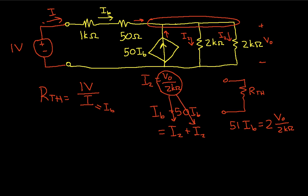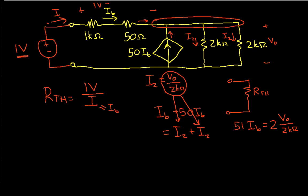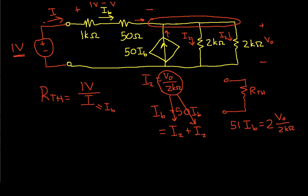Okay, now the last thing we need to do is come up with an expression for I sub B, which we can get by noticing that if we have a 1 volt source here, the voltage across the series equivalent of the 1k ohm and the 50 ohm is given by 1 volt minus V0. So we have then I sub B is equal to 1 volt minus V0 over 1k ohm plus 50 ohms, which is 1.05k ohms.